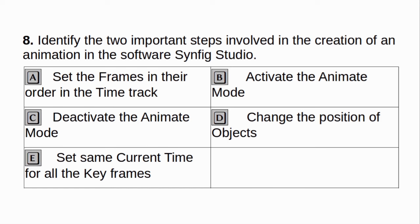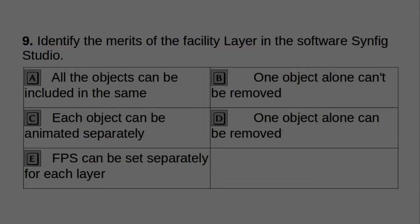Identify the two important steps involved in the creation of an animation in the software Synfig Studio. A. Set the frames in their order and the time track. B. Activate the animate mode. C. Deactivate the animate mode. D. Change the position of objects. E. Set same current time for all the keyframes. Answer: B and D.